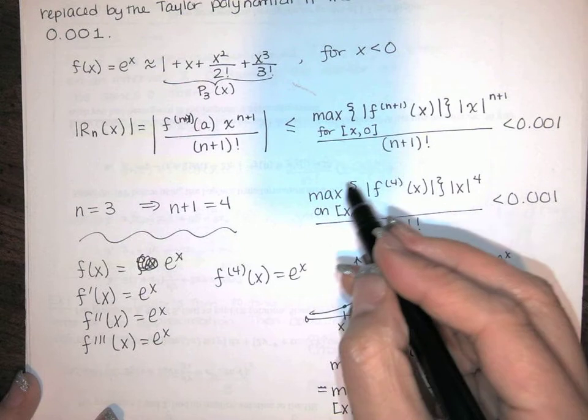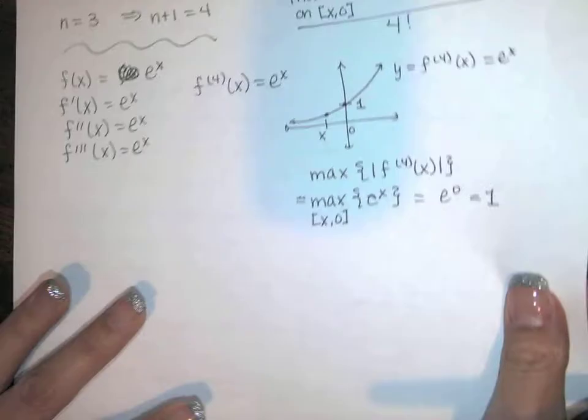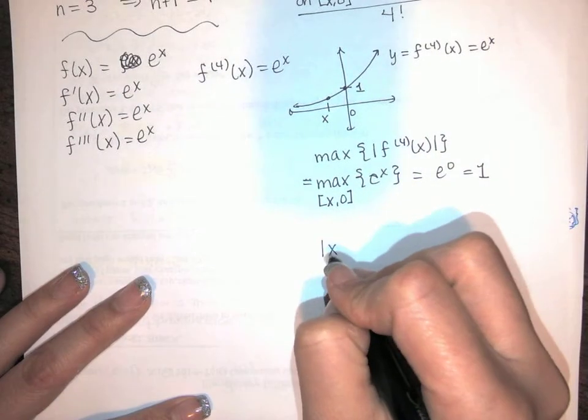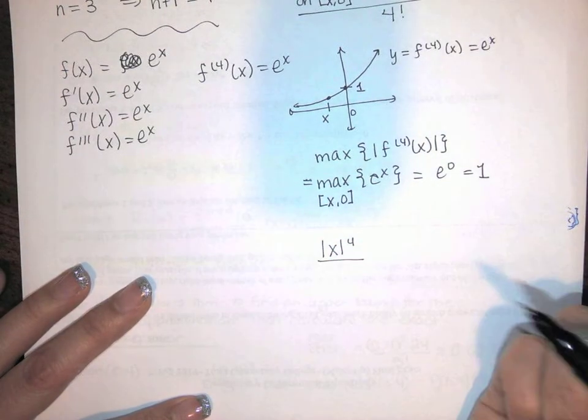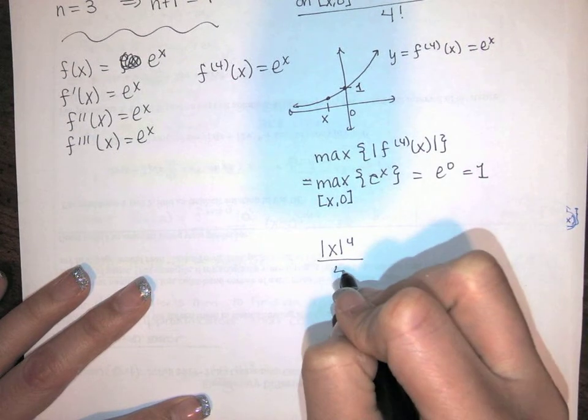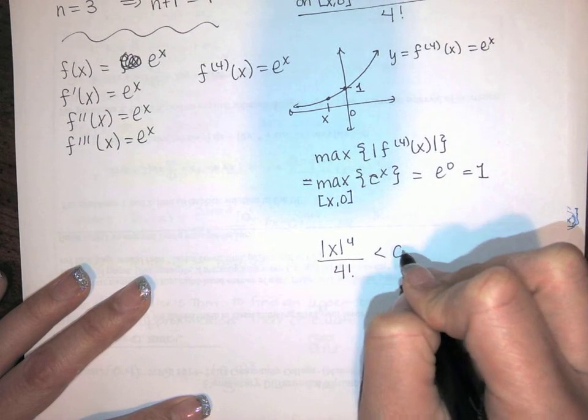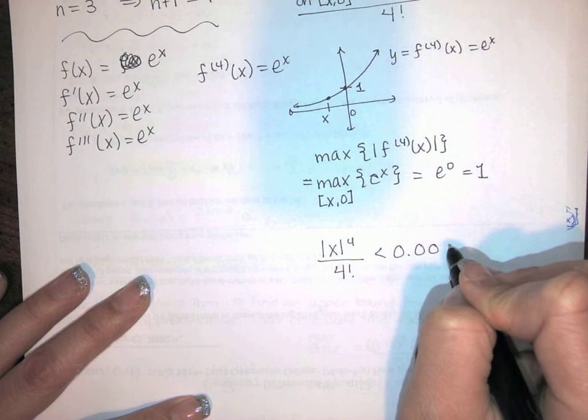So I can replace this whole piece with 1. And I get this really simple inequality. I get the absolute value of x raised to the 4th over 4 factorial has to be less than 0.001.